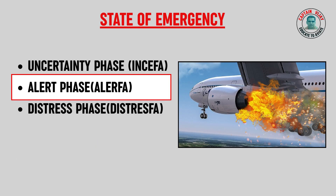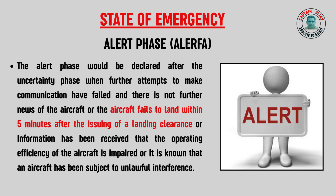The second phase is called the alert phase, with code word ALERFA. The alert phase is declared after the uncertainty phase, when further attempts to make communication with the aircraft have failed and there is no further news of the aircraft, or the aircraft fails to land within 5 minutes after the issuing of landing clearance, or information has been received that the operating efficiency of the aircraft is impaired, or it is known that the aircraft has been subjected to unlawful interference.